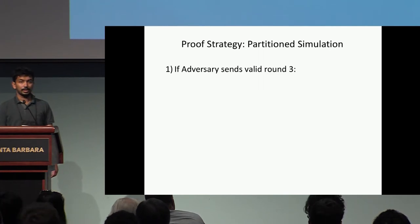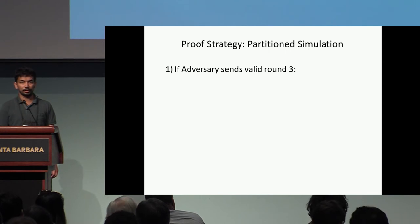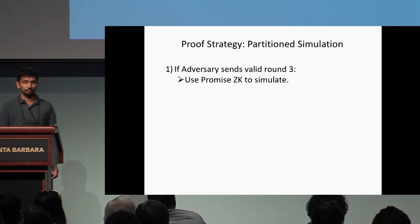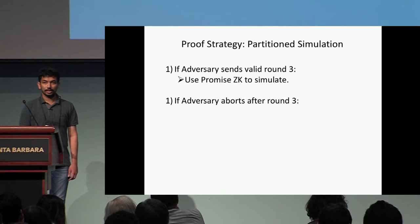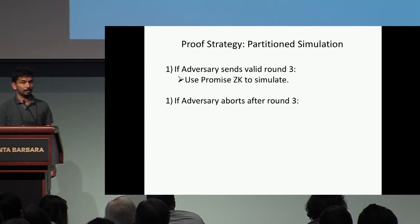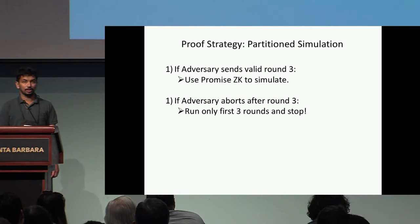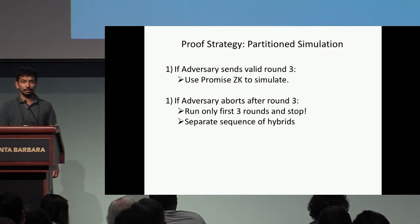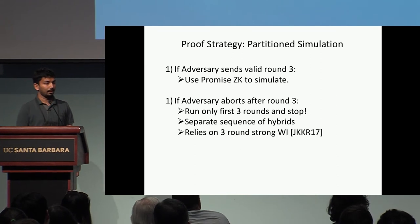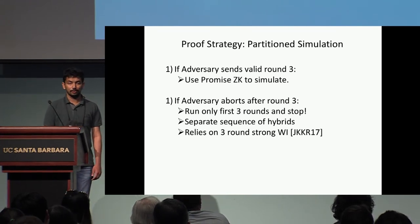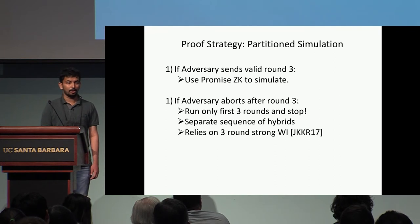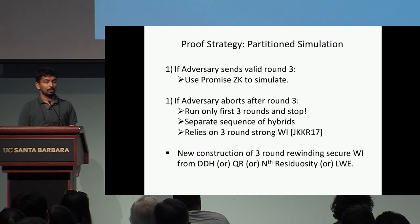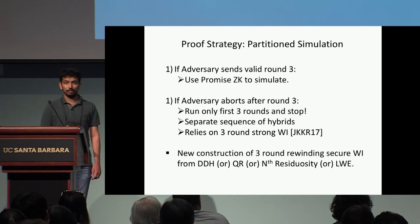Partition simulation works as follows. If the adversary sends a valid third-round message with non-negligible probability, we use the guarantees of Promise ZK to simulate. If the adversary aborts and does not send a valid third-round message, we run just the first three rounds and use a separate sequence of hybrids to argue correctness. To do so, we rely on a three-round strong witness-indistinguishable argument by Jane et al., and we also build a new three-round rewinding-secure witness-indistinguishable argument from standard assumptions.